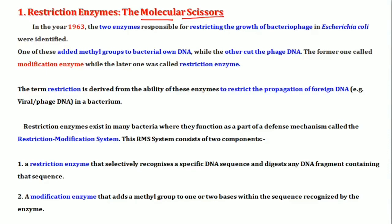In the year 1963, two enzymes were identified in bacteria, specifically in E. coli. These two enzymes got identified. The first enzyme adds a methyl group to bacteria's own DNA.